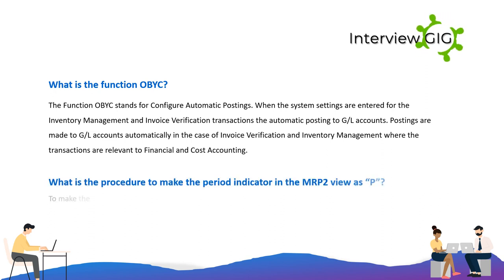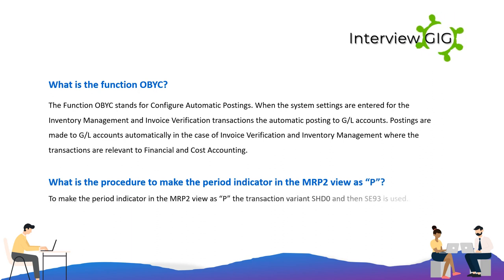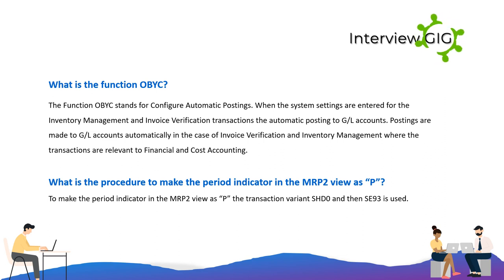What is the procedure to make the period indicator in the MRP2 view as P? To make the period indicator in the MRP2 view as P, the transaction variant SHD0 and then SE93 is used.